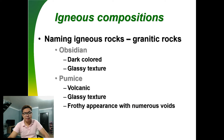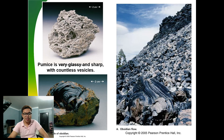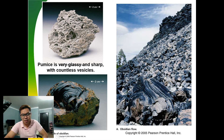Another granitic rock type is obsidian, which has a dark color and glassy texture. Pumice also has a volcanic, glassy texture with a frothy appearance and numerous voids. Here are examples of pumice and obsidian, including another variety of obsidian.